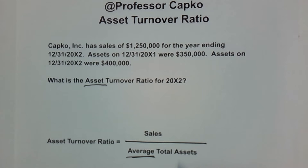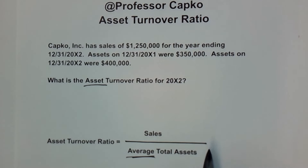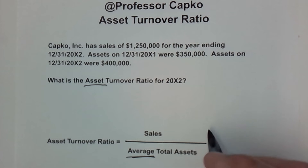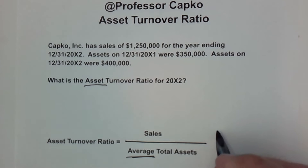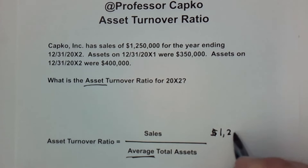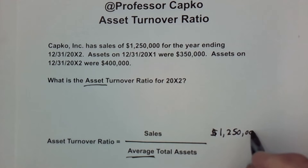We're looking for the average total assets and the sales for this particular year. The sales — that's pretty easy. We've been given that, and that is $1,250,000. So that's our numerator.